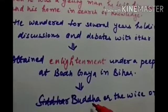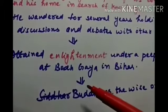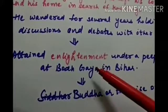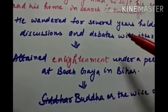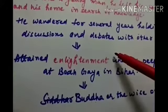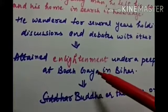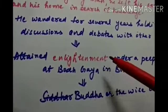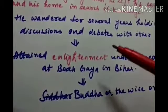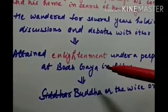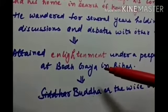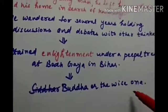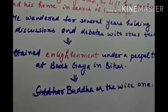According to Buddhism, all men were equal — no caste system, no Varna system. Buddha went to Sarnath near Varanasi where, for the first time, he shared his teachings with the people. Unlike Hindu priests who used Sanskrit, the Buddha taught in the language of the ordinary people, which was Prakrit.